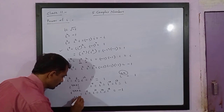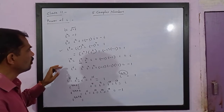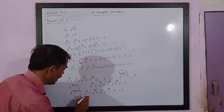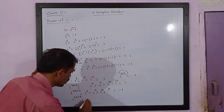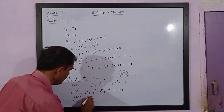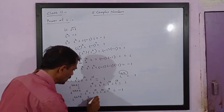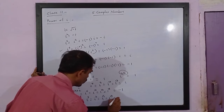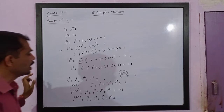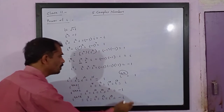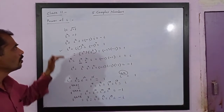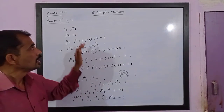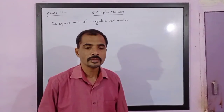When you go for i raised to 4k plus 3, the value is negative i. So for powers 4k plus 3, it means i raised to 7, that is equal to i raised to 11, equal to i raised to 15, equal to i raised to 19. The value comes to negative i. So the power of i will always be one of four values: i, negative i, positive 1, or negative 1.